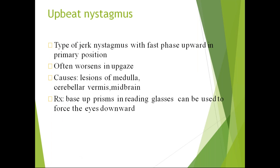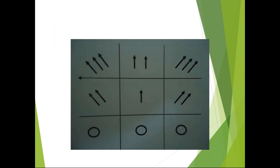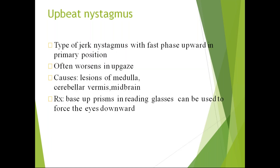Upbeat nystagmus: as the name indicates, the fast phase is in the upward direction in primary position. It is always a jerk nystagmus. It worsens when the patient looks upward. Causes include lesions in the medulla, cerebellar vermis, and midbrain. Treatment: base-up prisms — the base is kept up and the apex down, so the prism forces the eye downward, using reading glasses to force the eye into the downward position.